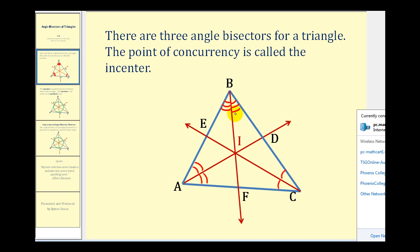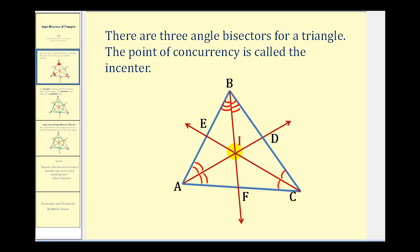When we construct the three angle bisectors of a triangle, all the bisectors will intersect at the same point. This is called the point of concurrency, and it has a special name. This point right here is called the incenter.